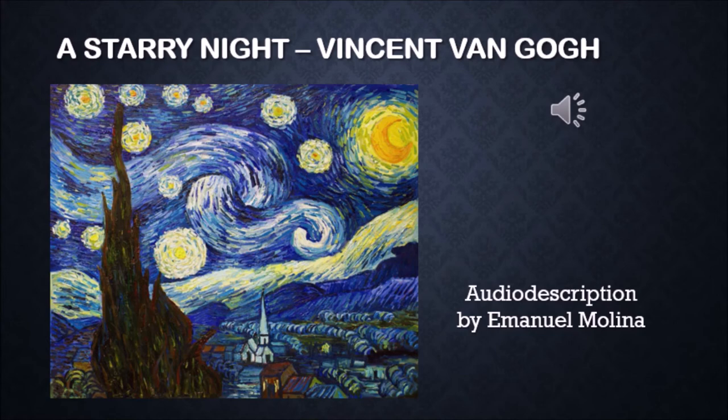In the foreground, there are wavy cypress trees. And in the background, a small village and rolling mountains. The top of the cypress trees and the steeple of a church in the village are the only elements pointing upwards. There are also eleven rounded light glowing stars.